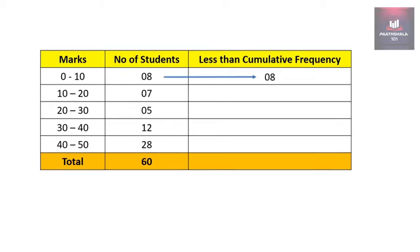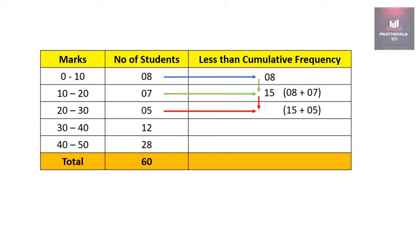For finding out the next less than cumulative frequency we will take 8 and the next frequency 7, so it will be 8 plus 7 which is 15. For the next less than cumulative frequency we will take 15 and 5, so 15 plus 5 equals 20.